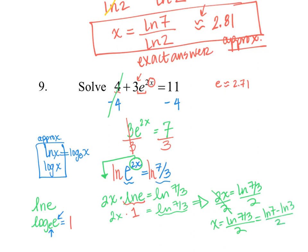Both of those forms are fine as exact values. If you plug that into your calculator — natural log of seven thirds divided by 2, or natural log of 7 minus natural log of 3 divided by 2 — the approximate value ends up being 0.424.